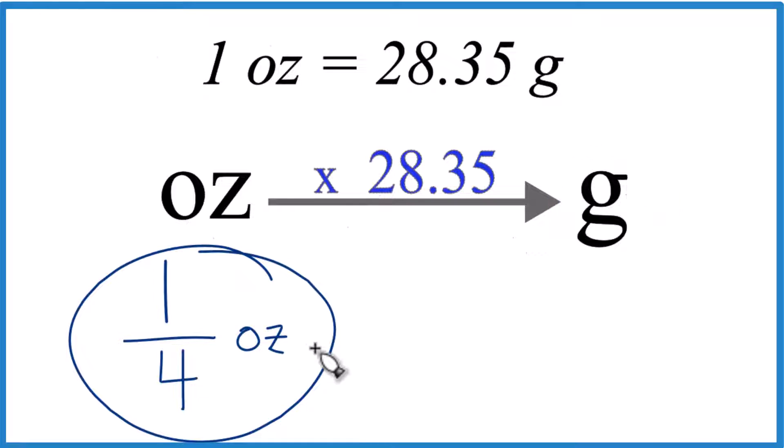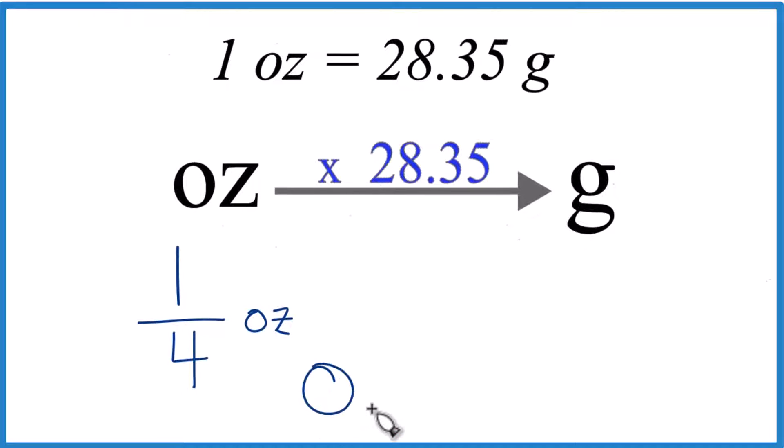Probably the easiest way is to think of one-fourth as a decimal. That'd be 0.25. If you didn't know that, you could divide 1 by 4 on your calculator, and you end up with 0.25. So that's our decimal for one-fourth. Let's use that.